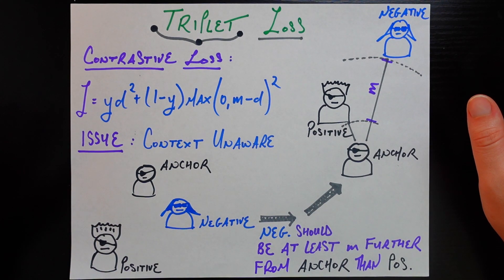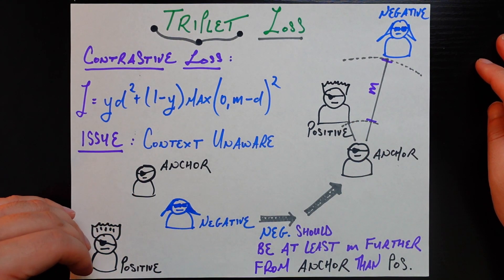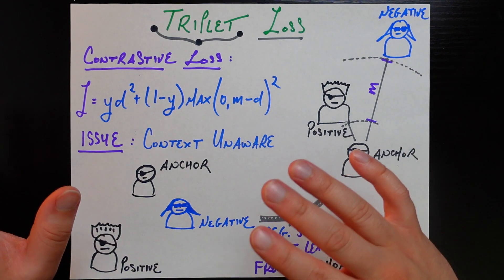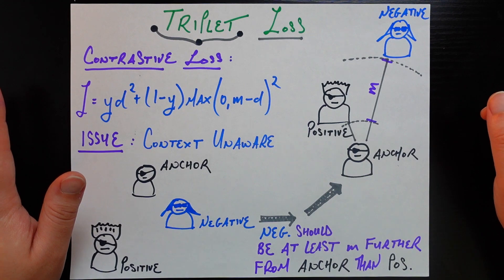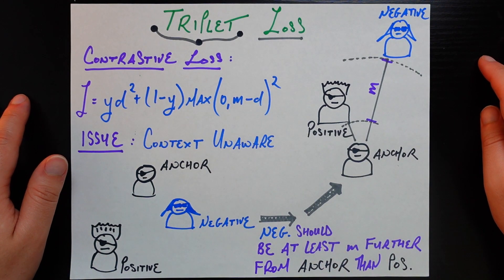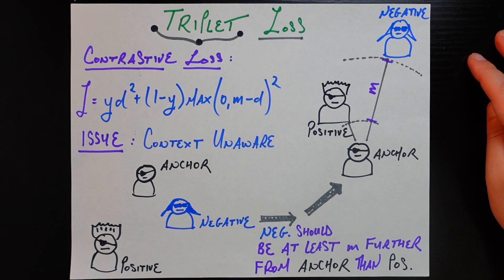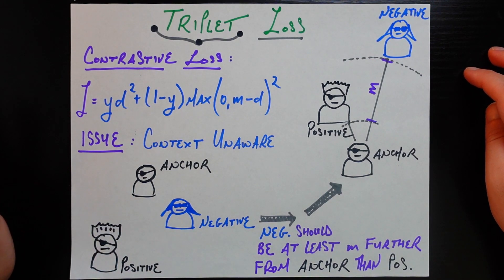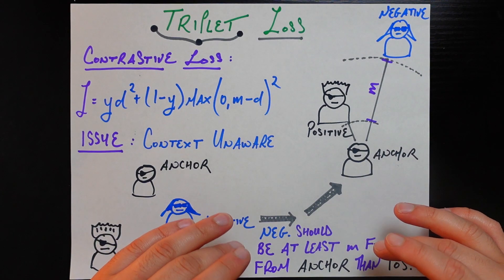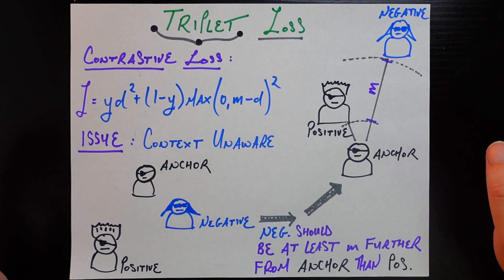Triplet loss, unlike contrastive loss which operates on pairs of examples, operates on these trios — these anchor, positive, and negative examples. Its goal is similar to contrastive loss but addresses hard negatives and hard positives better. Stated in one sentence: given an anchor, positive, and negative, the negative example should be at least a distance m further away from the anchor than the positive example. Let's make sure we fully understand this sentence, because once we do, the math for triplet loss will be much easier.